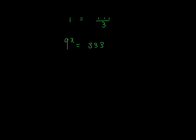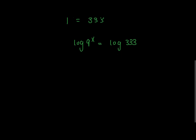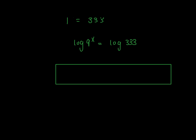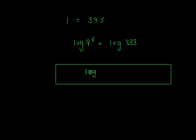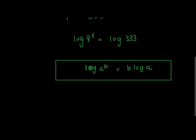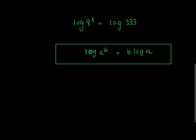From here we can take log of both sides of the equation. We use the law of logs which says log(a^b) is just equal to b·log(a). So we're going to use it — we'll drop x down and we'll have x·log 9.